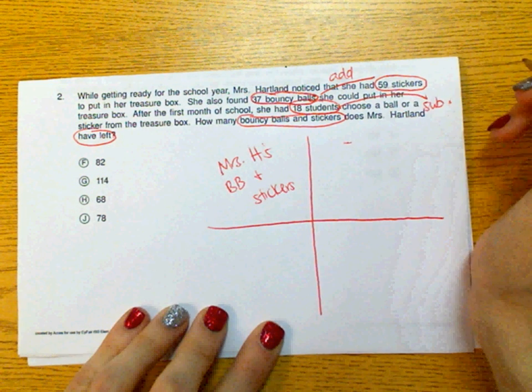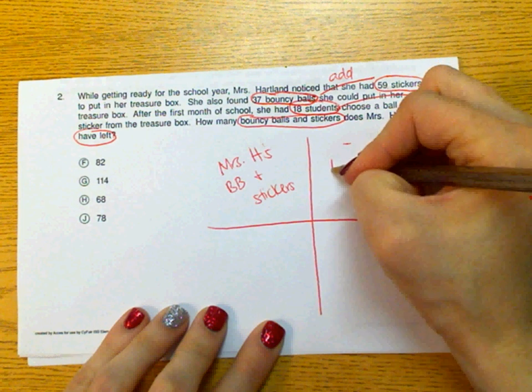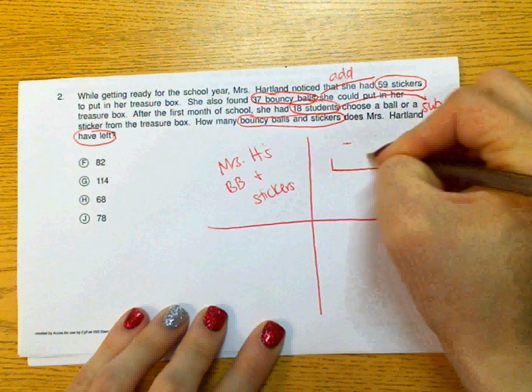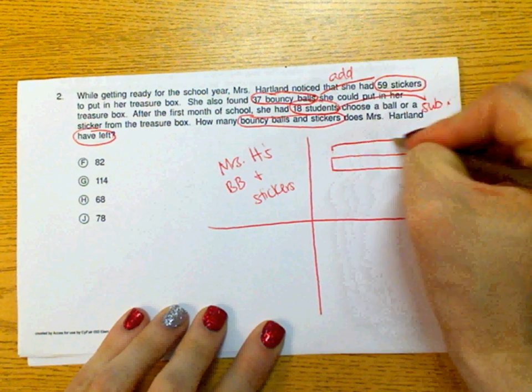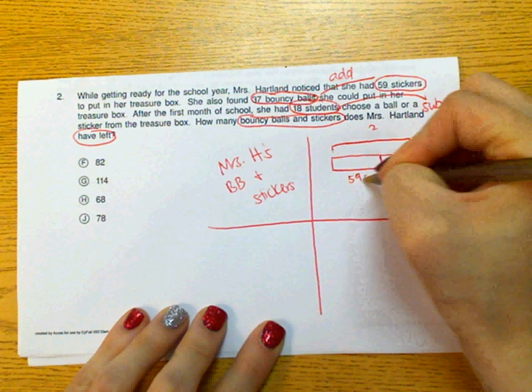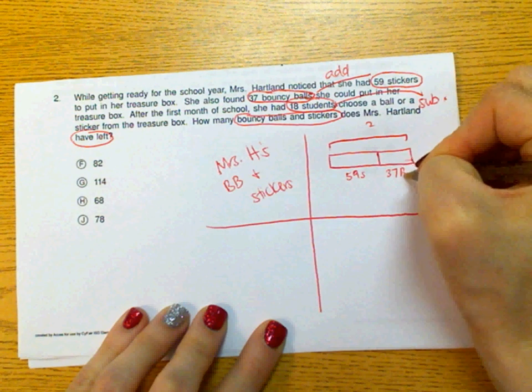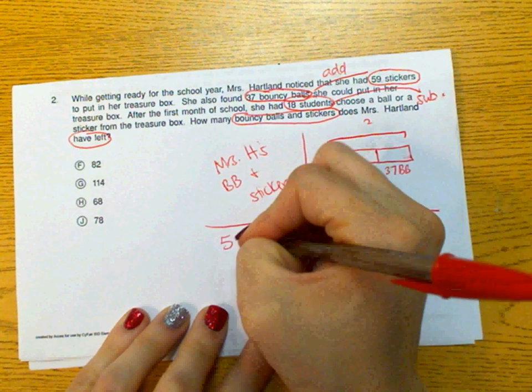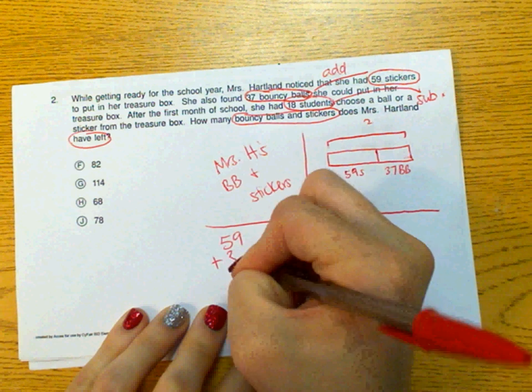Okay, we're going over here. We know that we have bouncy balls and stickers. We don't know our total, but we know we have about 59 stickers and 37 bouncy balls. So we're going to add 59 and 37.